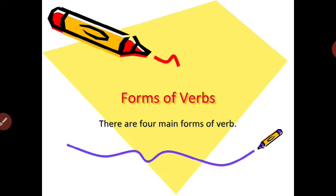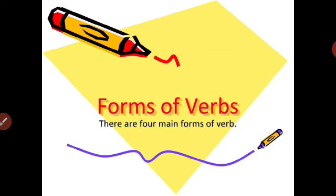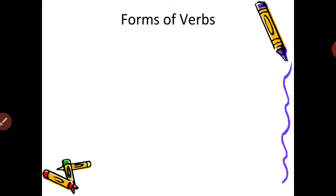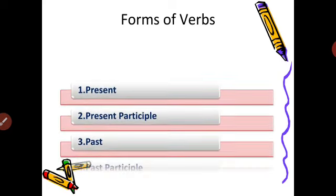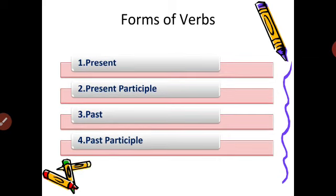But today we are going to learn about forms of verbs. There are four main forms of verbs — four different phases of verbs. The forms of verbs are: present form, present participle form, past form, and past participle form. Let's go through them one by one.